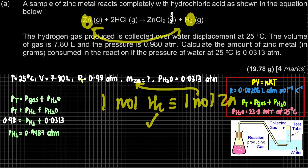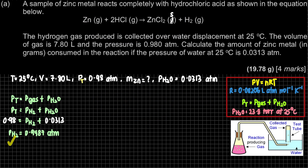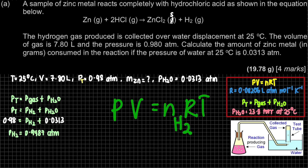So we need to find the number of moles of H₂ first, since we now know the pressure of H₂. Going back to Chapter 5 and the ideal gas equation, PV = nRT, we will use P_H₂ = 0.9487 atm. Volume is given as 7.8 liters. We need to find n, the number of moles of H₂.